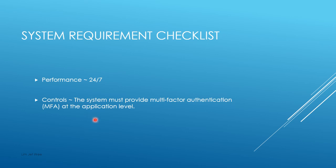You also have to think about control — what type of control do you want in your system. A simple example: do you want multi-factor authentication in addition to your ID and password? So remember, whenever you create a checklist for your system requirements, make sure you cover all five of these areas.